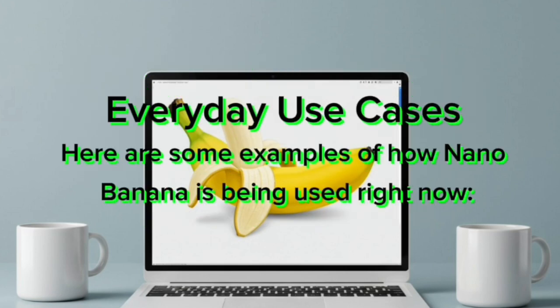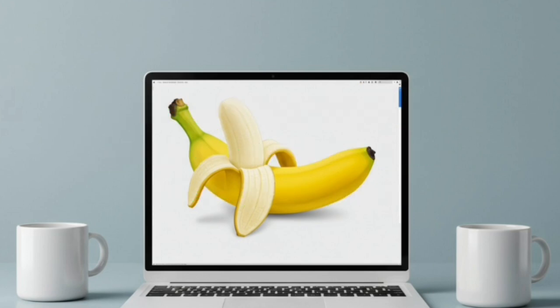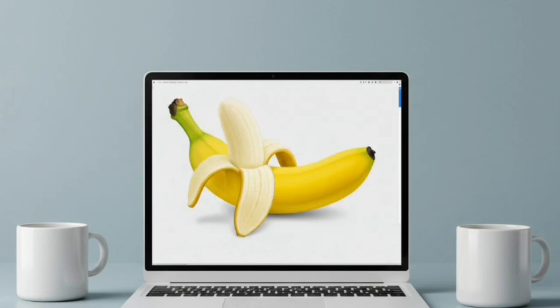Everyday use cases: here are some examples of how Nano-Banana is being used right now. First, Social Media Fun: people turn their selfies into comic strips or figurines. Viral challenges have emerged where users prompt the AI to place themselves in wild scenarios — as astronauts, medieval knights, or anime characters.